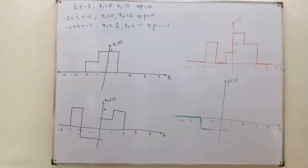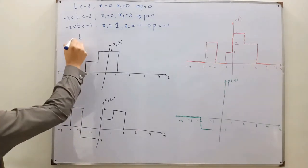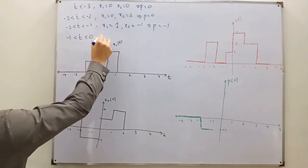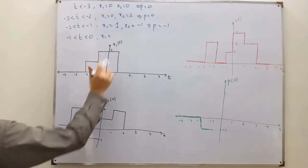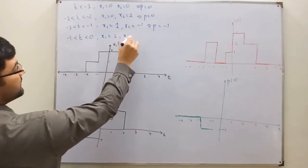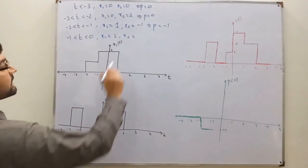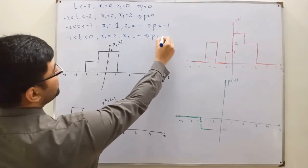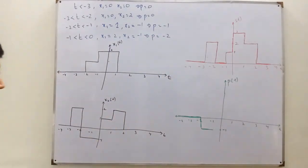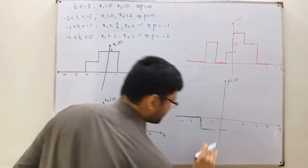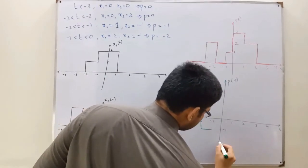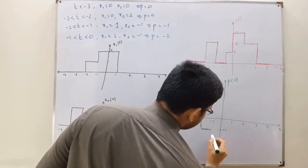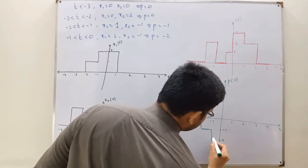From negative 1 to 0: when t is greater than negative 1 and less than 0, x1 is 2 and x2 is negative 1. So the product equals 2 times (negative 1), which is negative 2. The graph now goes to negative 2.